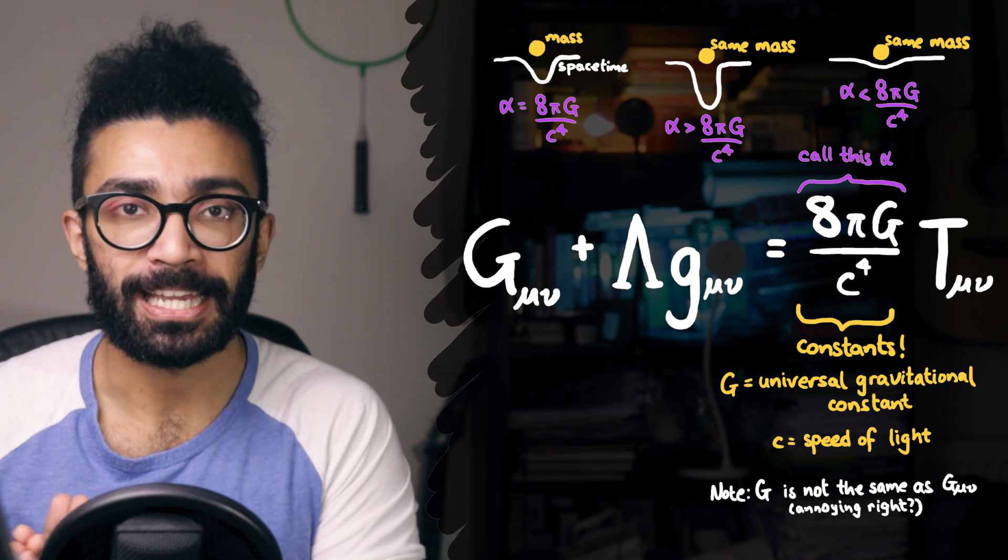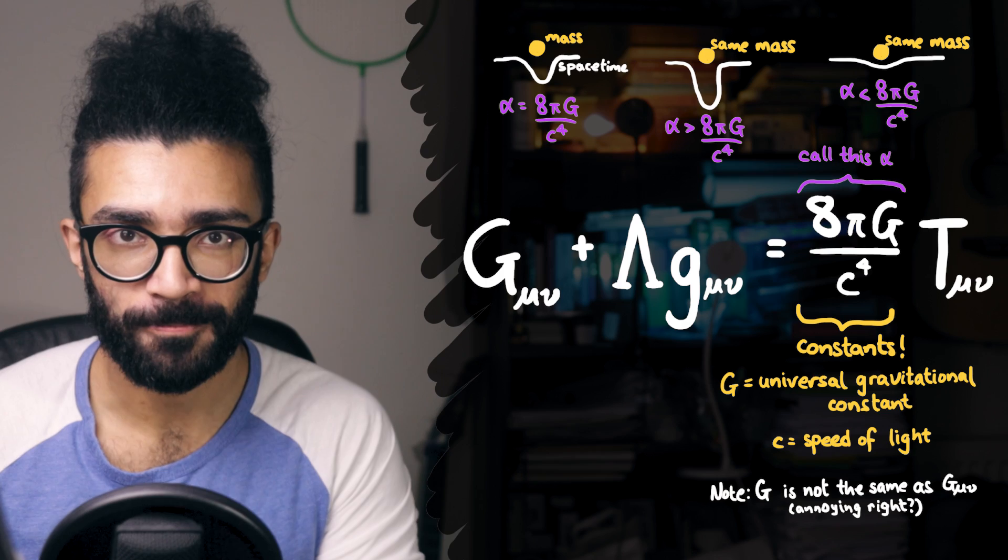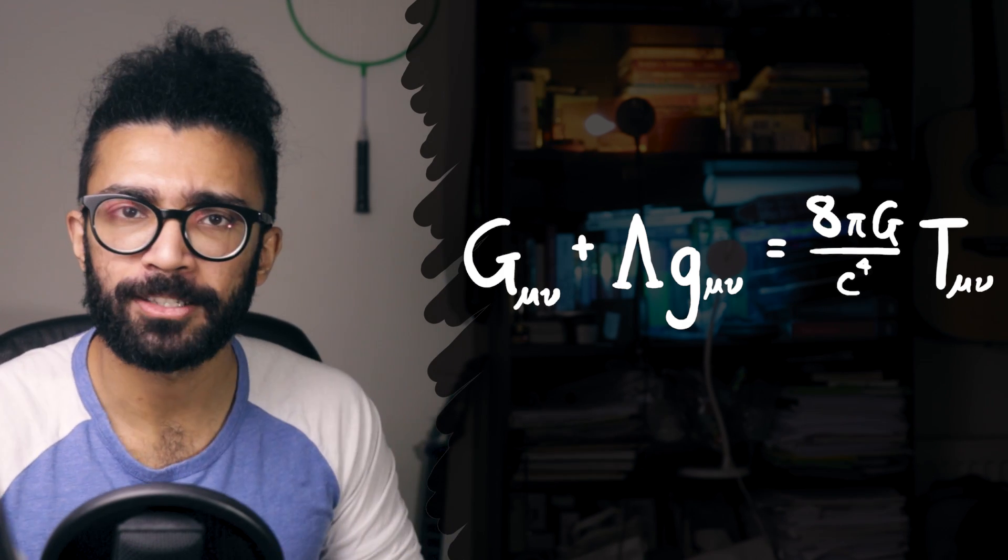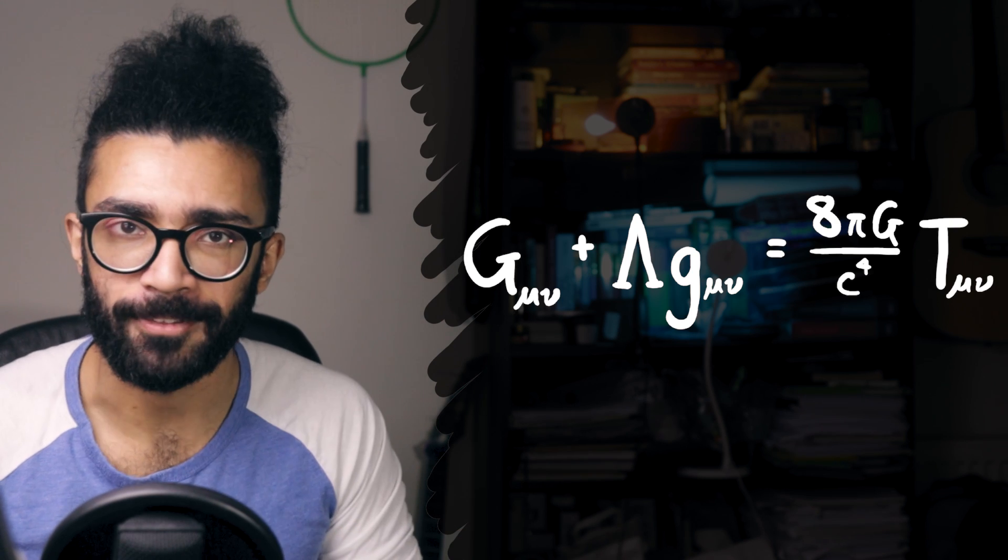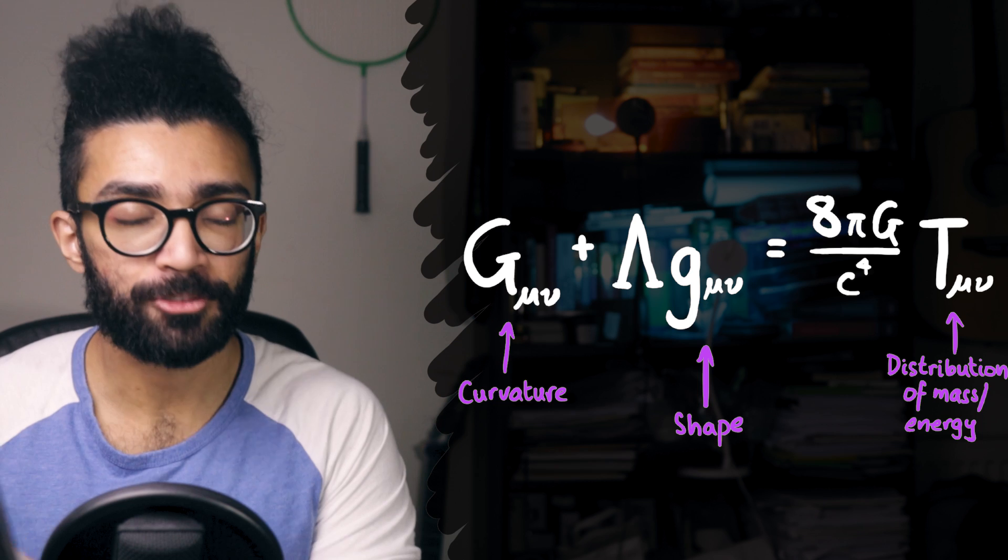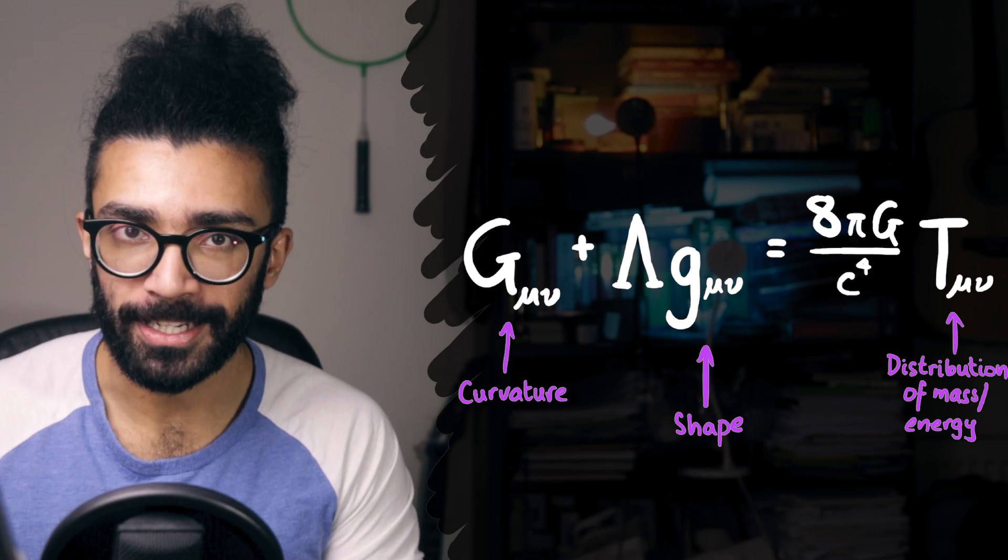If this constant was smaller, we'd see less warping. But in our universe, the constant seems to be 8 pi g over c to the power of 4. So anyway, we've basically looked at a simple description of Einstein's field equations and what information they convey.